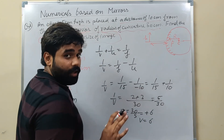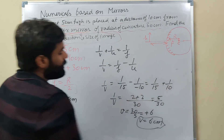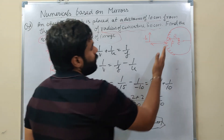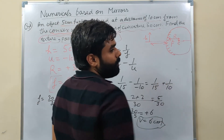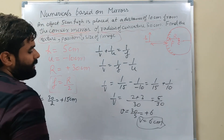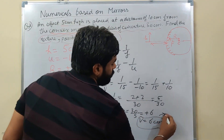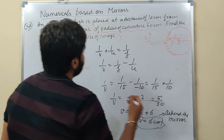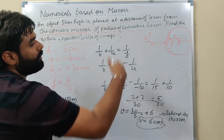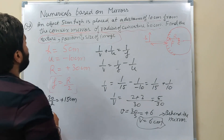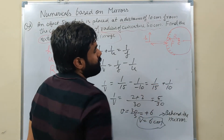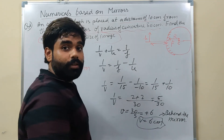V = +6 cm. The positive sign means image is formed behind the mirror - which is correct for a convex mirror. Image is always formed behind the mirror (virtual). Position = 6 cm behind the mirror. Since it is behind the mirror, the image is virtual. Nature: virtual and erect.